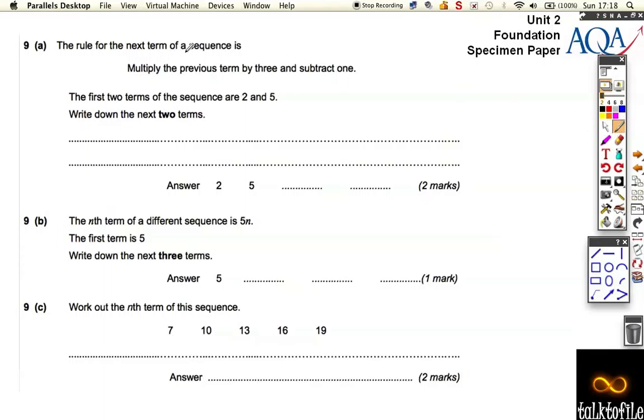Okay, question number 9 on this specimen paper and this is all about sequences. It says the rule for the next term of a sequence is multiply the previous term by 3 and subtract 1. So you triple it, take away 1.